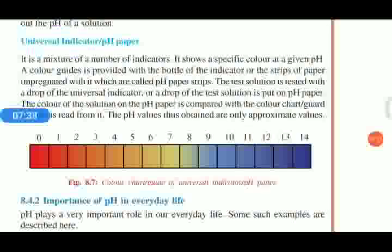pH paper is a mixture of a number of indicators. It shows a specific color at a given pH. If our pH paper shows red color, we can identify its pH value is 0. If its color is dark blue, its pH value is 14. Next time, we can identify easily how concentrated the solution is by using the color of pH paper.